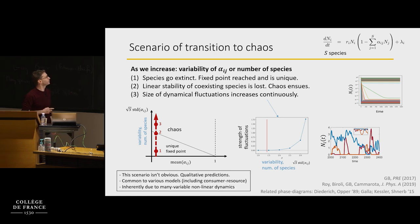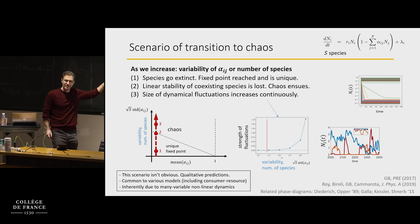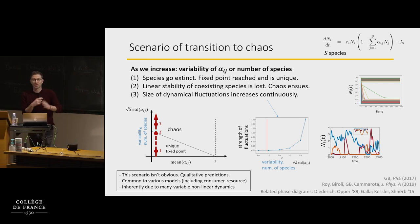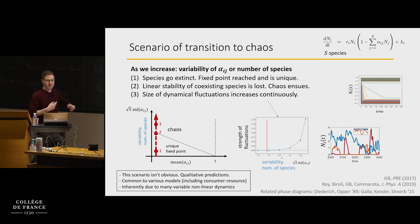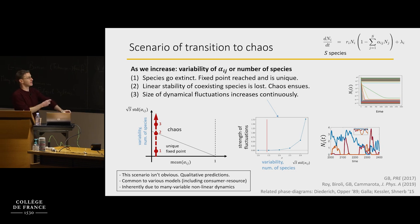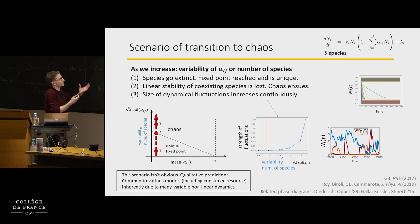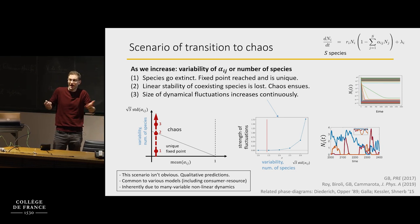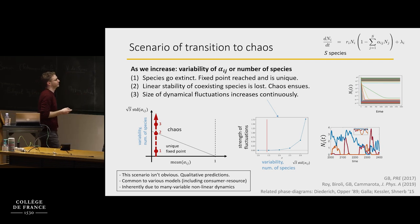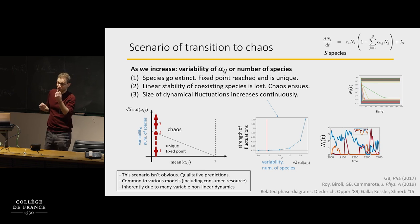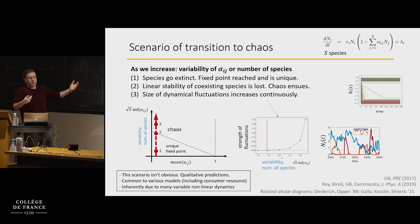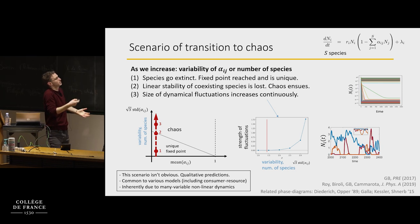This scenario is not obvious — it could have been that the order of things was different. A nice thing is that these are qualitative predictions. Even though this comes from very complex many-variable nonlinear dynamics, it is common to many models. Other people in the community have been trying different models, for example consumer-resource models where resources are modeled explicitly — and you still see more or less the same scenario.